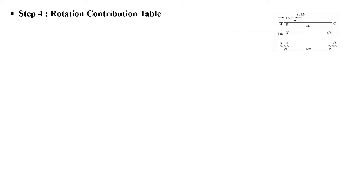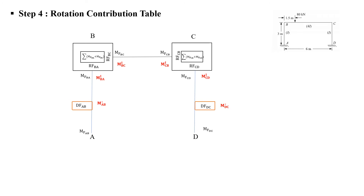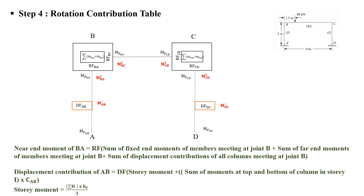The fourth step involves the rotation contribution table. For columns of the same height, the rotation contribution table is used directly. For columns of different heights, the moment due to displacement contribution is computed. The displacement factor gives the story moment, plus the particular story columns' top-level vertical moments multiplied by the correction factor.